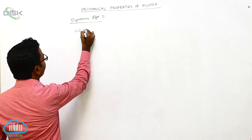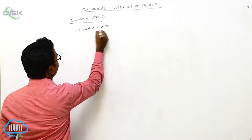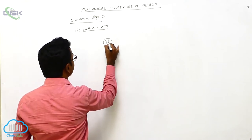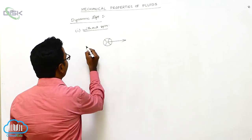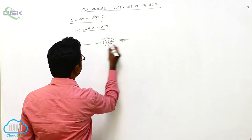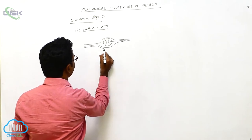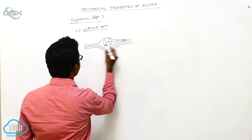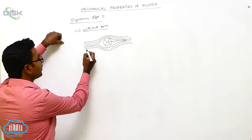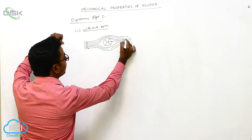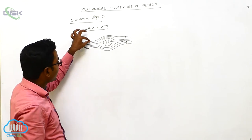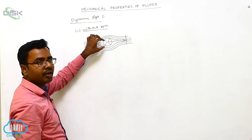First case: the ball is moving without spin, meaning the ball has only linear motion in the air. Around the ball, the shape of the streamlines is symmetric. All the streamlines have equal distance between them — the consecutive streamlines have equal spacing. The streamlines are symmetric above and below the ball.